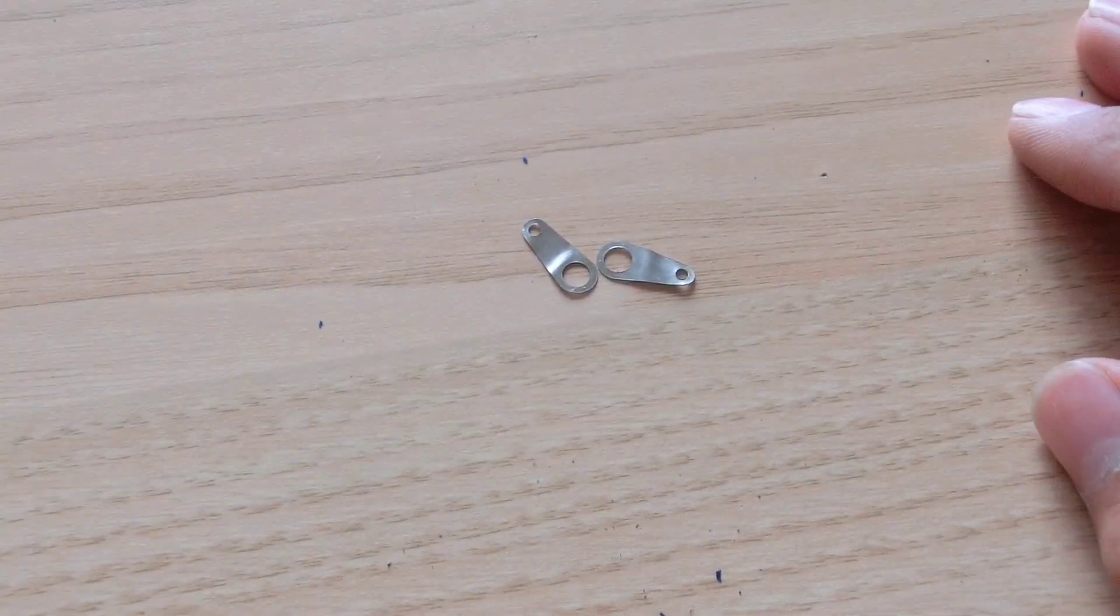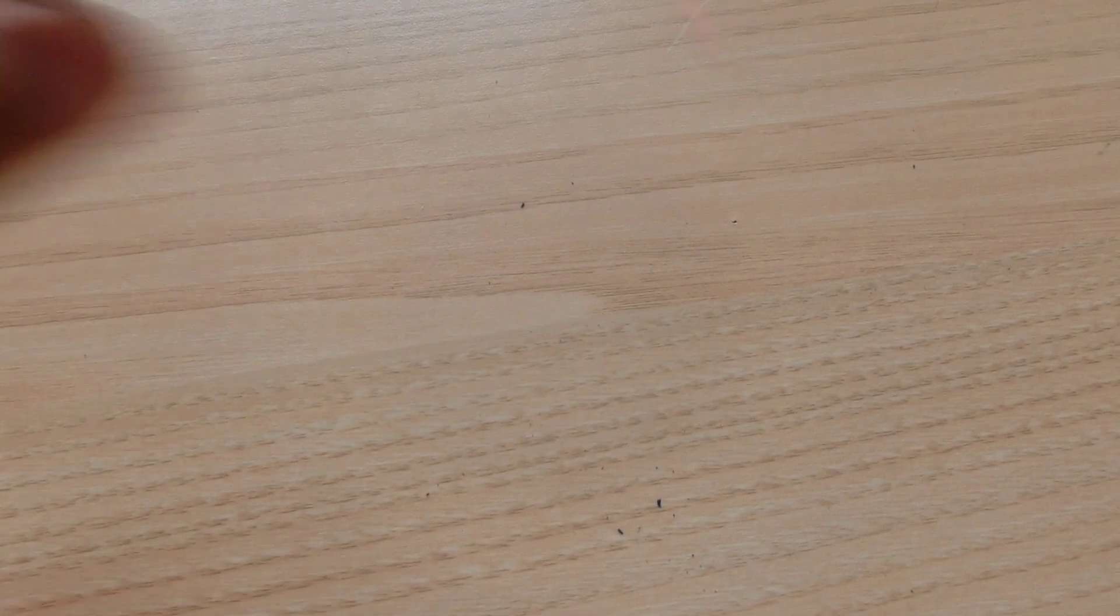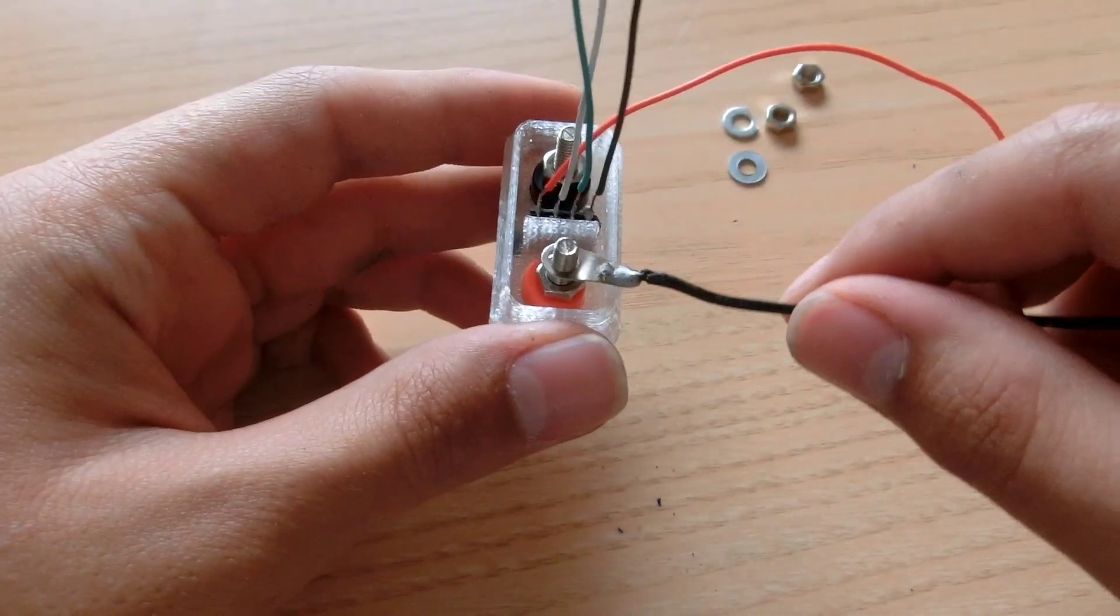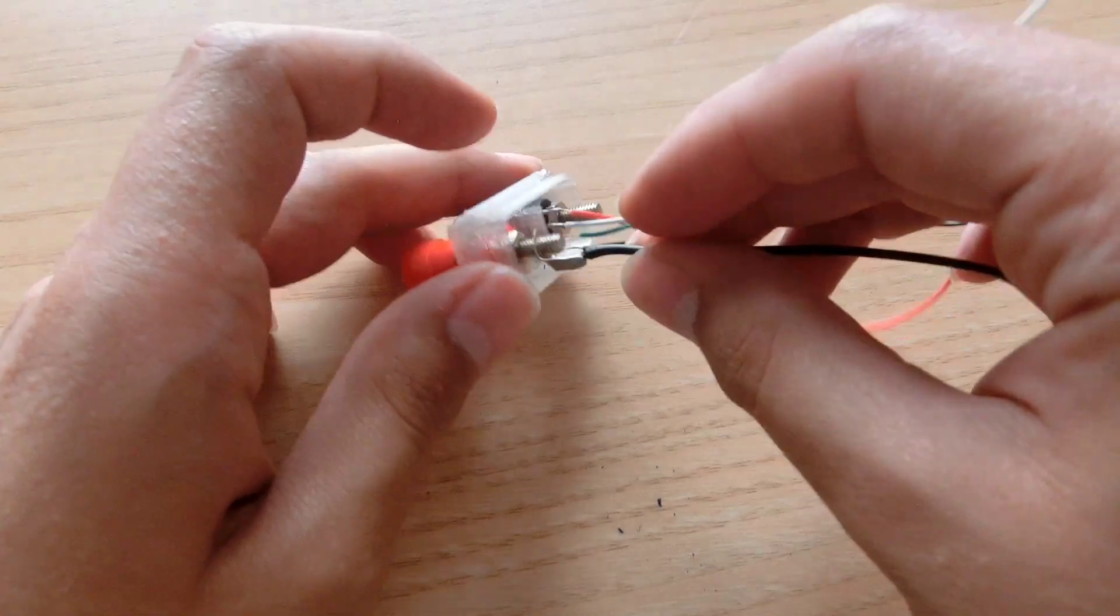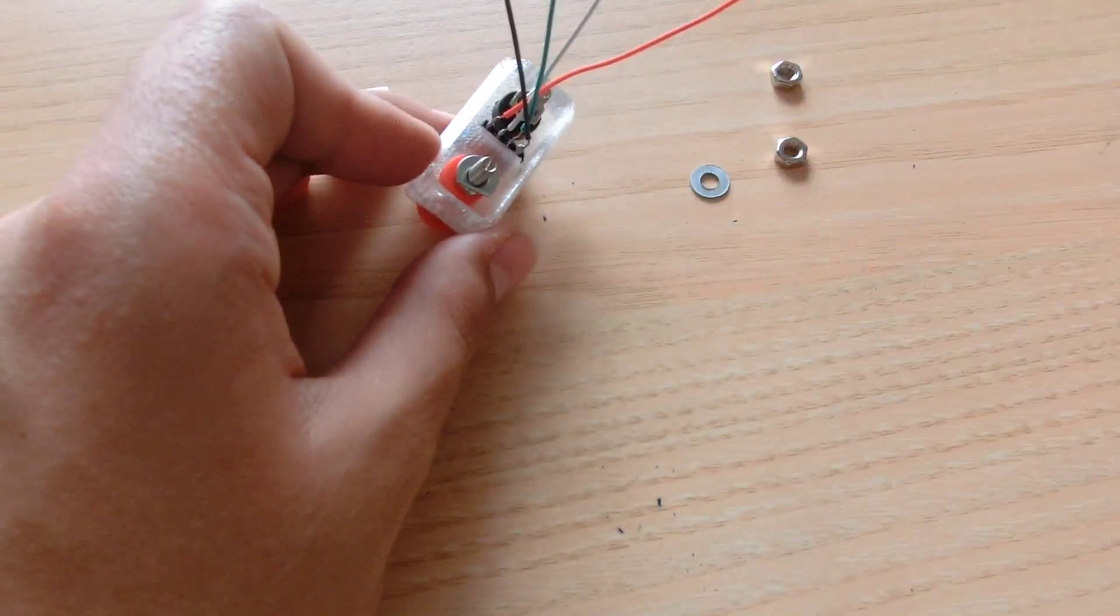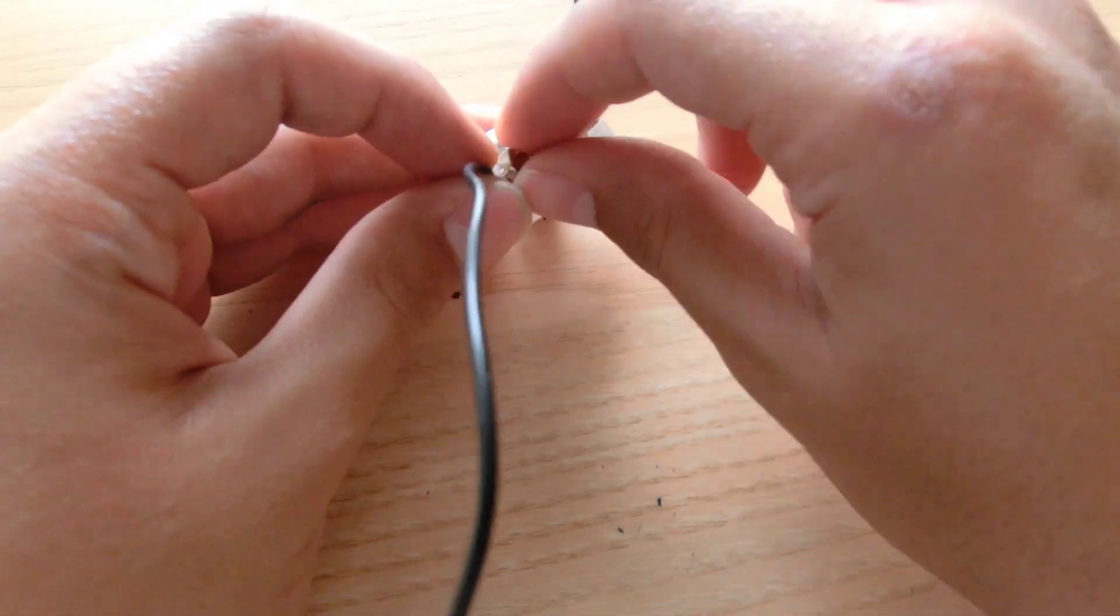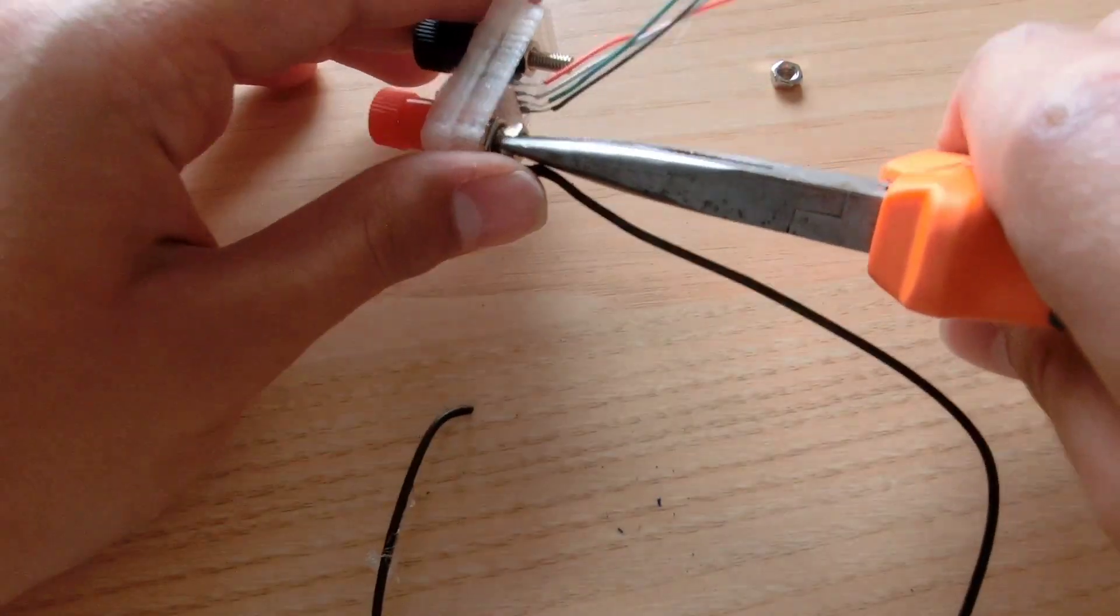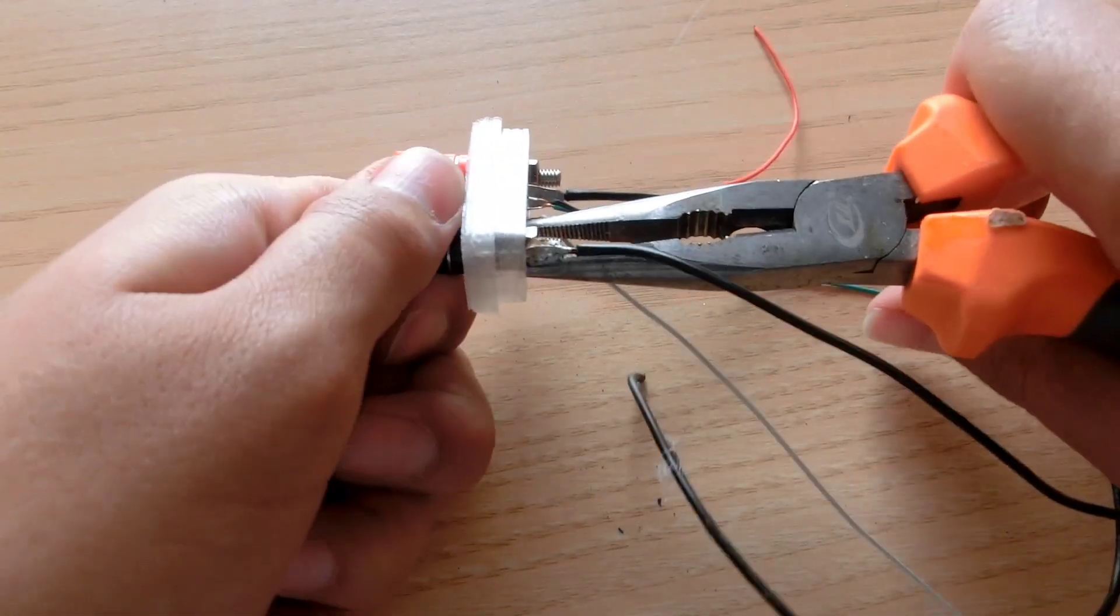Take the tabs of the banana jacks we took off earlier and solder 18 gauge wires to them. Now take the cover, the nuts and washers and the two tabs. Bend the tabs on the wires at a 90 degree angle. Now add a washer, then the tab, and then a nut. Now tighten it up with a pair of pliers. Do the same for the other side.